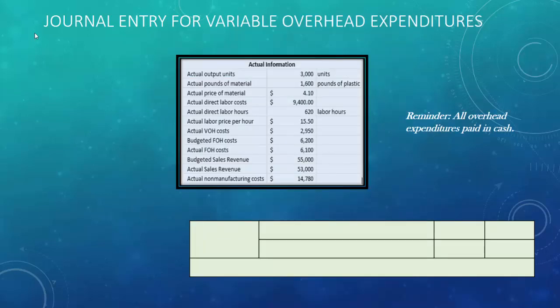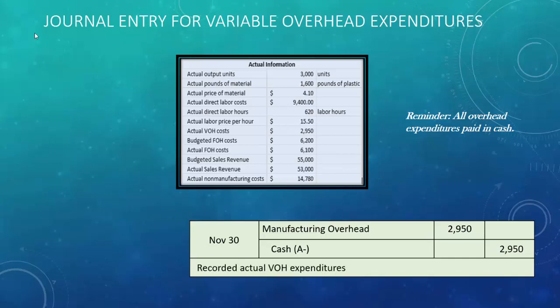For variable overhead expenditures, all overhead was paid in cash. Debit manufacturing overhead $2,950 to record the actual VOH costs, and credit cash $2,950. It's uncommon for all overhead to come from cash — you'd typically have accumulated depreciation, prepaid expirations, or payables — but for simplicity, we're recording all expenditures in cash.